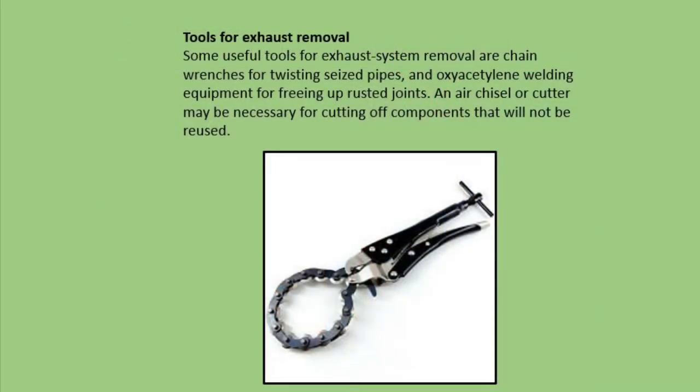Tools used for exhaust removal. Some useful tools for exhaust system removal are chain wrenches for twisting seized pipes and oxy-acetylene welding equipment for freeing up rusted joints. An air chisel or cutter may be necessary for cutting off components that will not be reused.